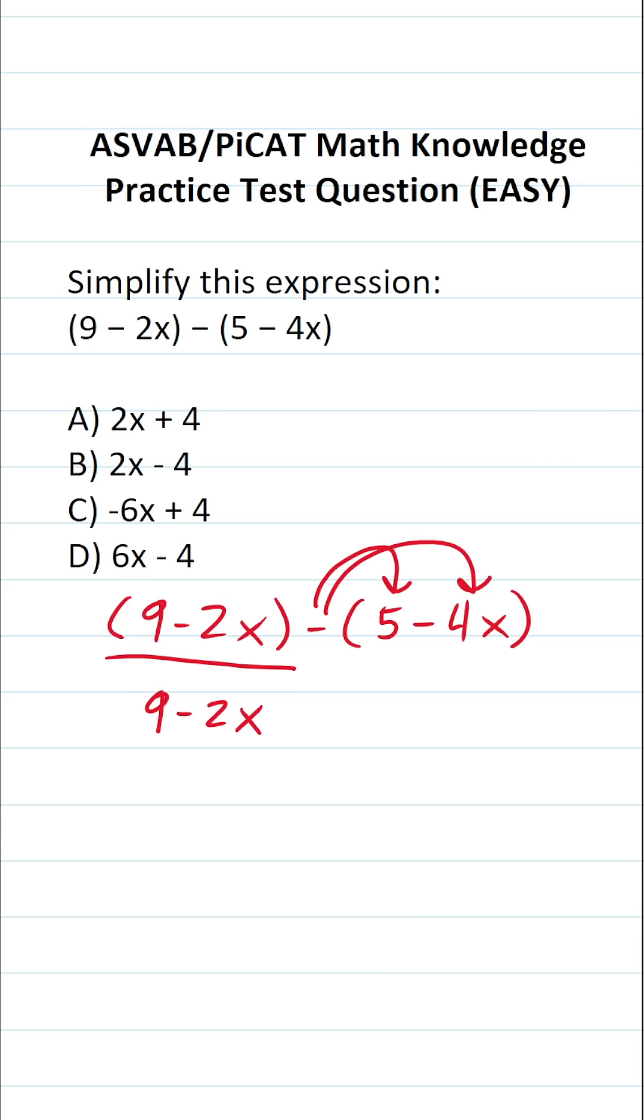This becomes negative times positive 5, and negative times a positive is going to be a negative, so this becomes minus 5. Then we have negative times negative 4x, and negative times a negative is going to be positive, so this is plus 4x.